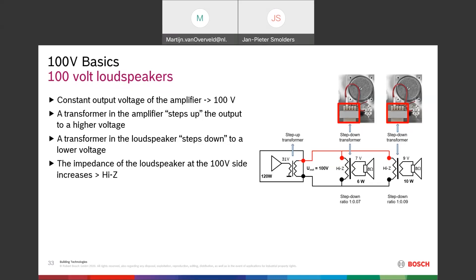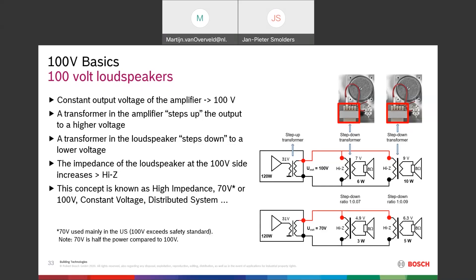This is also known as a 70V, 100V, constant voltage, or distributed system. 70V is used mainly in the US because 100V exceeds their safety standard. It's worth noting that 100V is quite high voltage — at full power with an emergency signal on the amplifier output, 100V can be genuinely harmful. Be careful: working on 100V systems is not without danger.